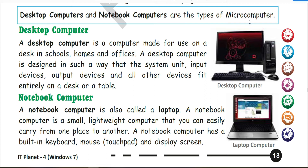Let's see the image of a desktop computer. It is a computer made for use at a desk in school, home and office. This desktop computer is placed on a desk or table. A desktop computer is designed in such a way that the system unit, input devices, output devices and all other devices fit entirely on a desktop or a table.